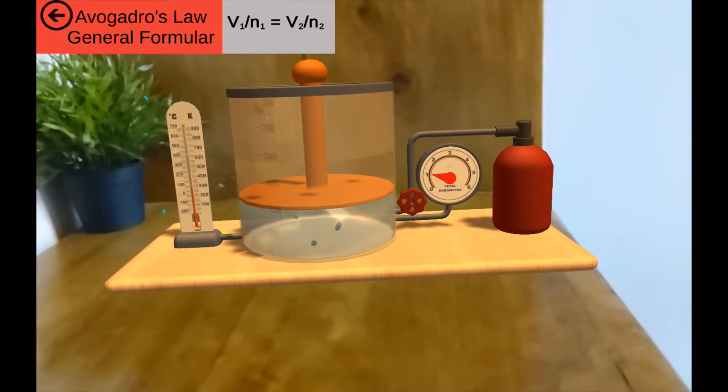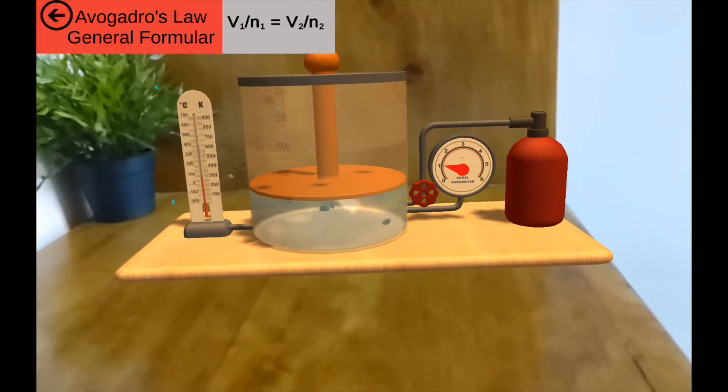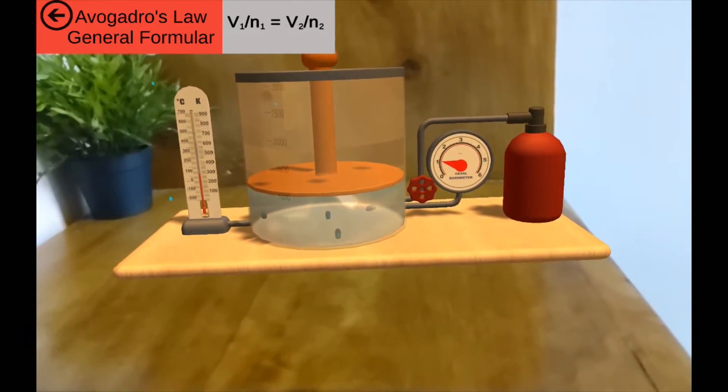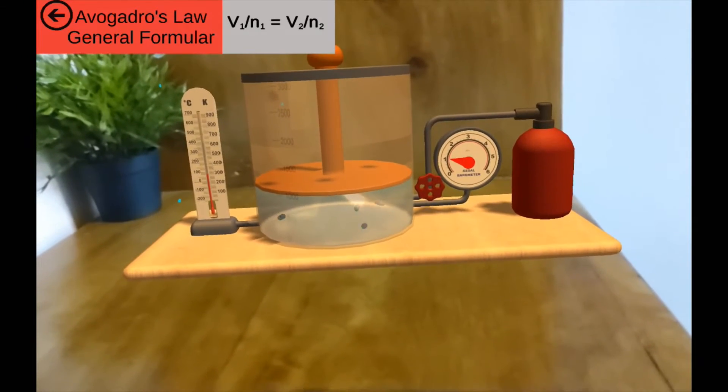The amount which is measured in moles can be denoted with a small letter n. You can see the formula above that V1 divided by n1 is equal to V2 divided by n2.